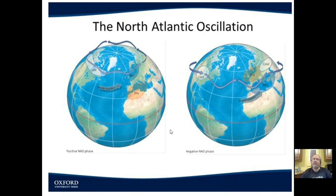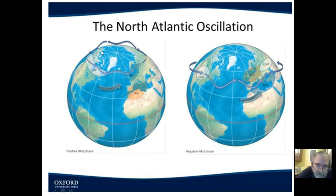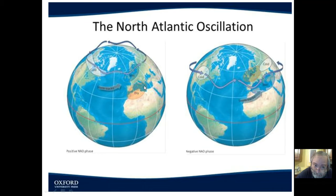This diagram shows what the NAO does to the flow of the jet stream. On the left is the positive phase: cold air is constrained to a more northerly track, it's very tight near the polar regions, with wet and dry conditions shown. In the negative phase the jet stream meanders and dips further south, bringing cold conditions and wet conditions to southern Europe and the Mediterranean, and dry conditions over Scandinavia and northern Europe.